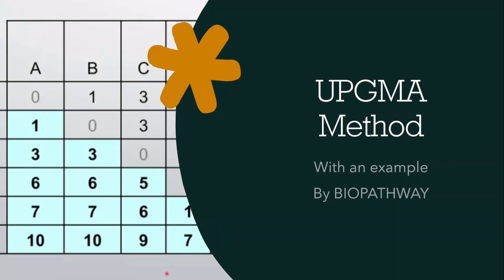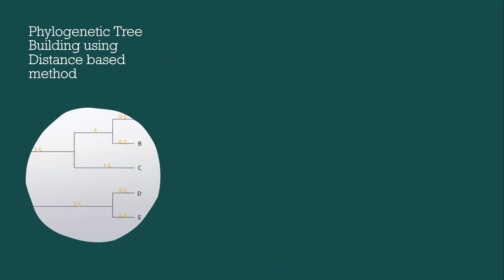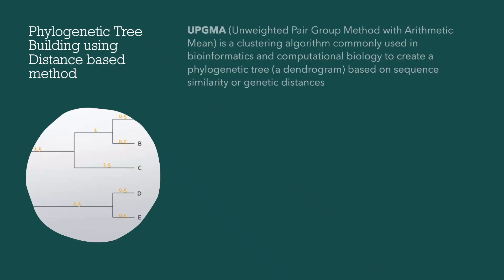Today's video is about the UPGMA method and how we can solve it. This method is a distance-based method for building a phylogenetic tree. UPGMA is a clustering algorithm commonly used in bioinformatics and computational biology to create a phylogenetic tree based on sequence similarity or genetic distances.